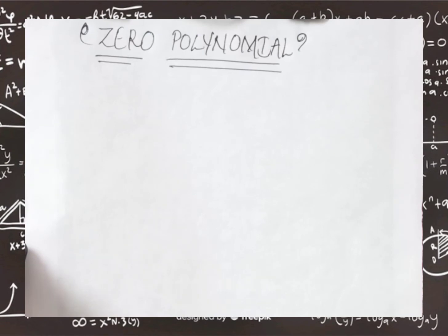This time we are going to learn the class 9th maths, chapter number 2, polynomials, example number 4.